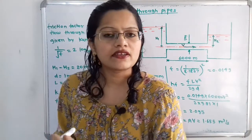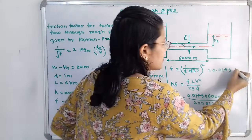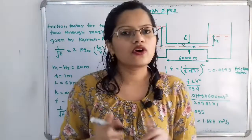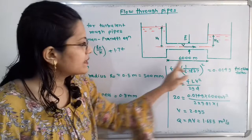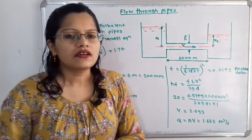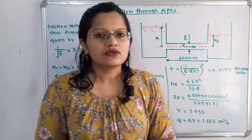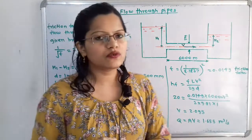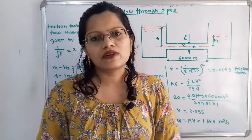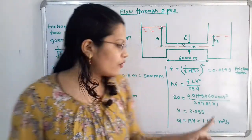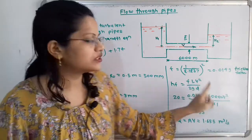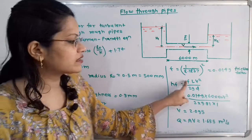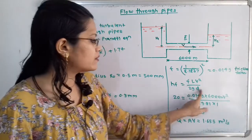Since all local losses are neglected and the pipe is very long, only friction losses are considered. The head loss due to friction HF is calculated using the Darcy-Weisbach formula: HF equals F × L × V² divided by 2 × g × D. Note that when using the friction factor F directly, the formula is F × L × V² / (2gD), not 4F as used with the coefficient of friction.